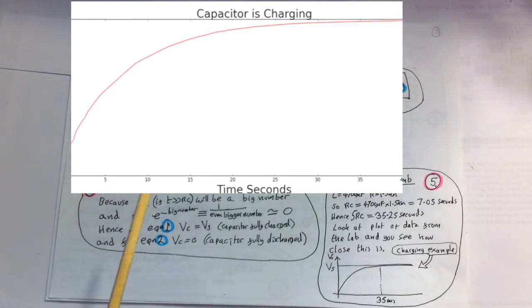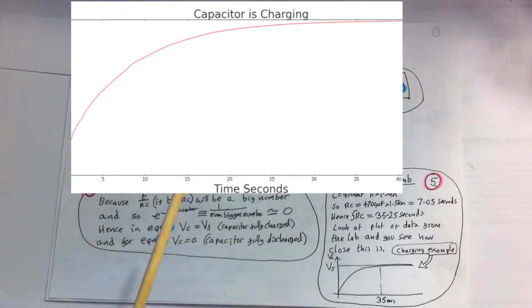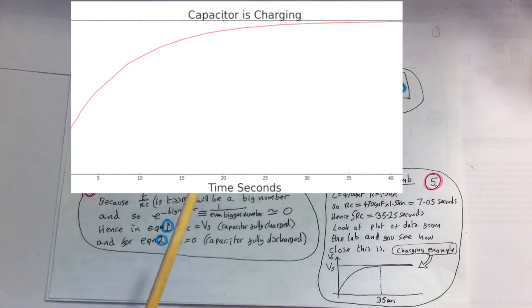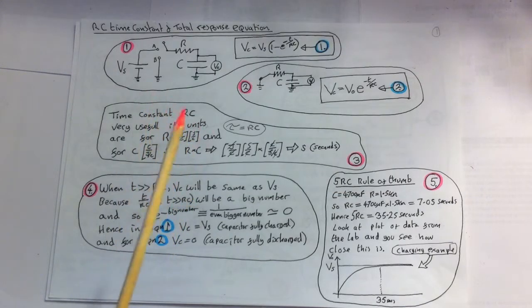This means before we even did the lab, we could have known how long it would take by just using the 5RC rule, so that's a very useful rule of thumb.